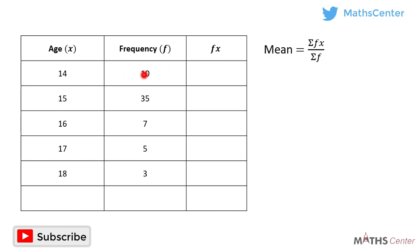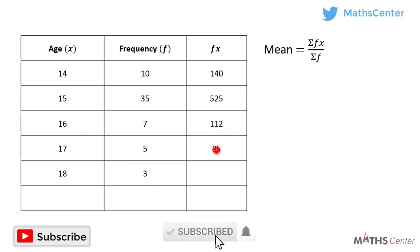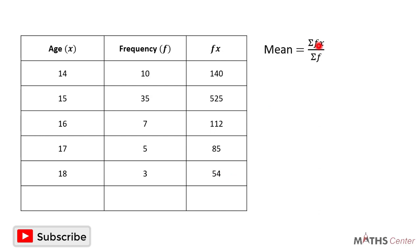We find the fx values — the product of f and x. The first one is 10 times 14 which is 140. The next is 35 times 15 which is 525. Then 7 times 16 which is 112. Then 5 times 17 which is 85. And the last one is 3 times 18 which is 54. Adding all fx values: 140 plus 525 plus 112 plus 85 plus 54 gives us 916.